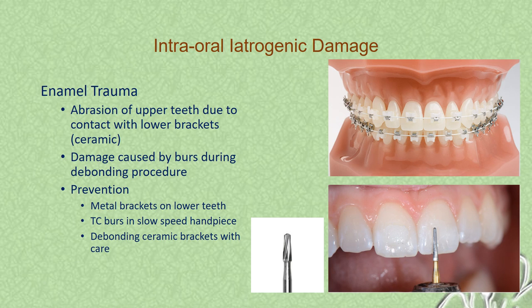Enamel trauma can occur in a few ways. One is that the upper teeth get abraded due to contact with the lower brackets which are made of ceramic. Damage can also be caused by burs during the debonding process. To prevent enamel damage in the case of ceramic brackets, one way is to use metal brackets on the lower, especially lower posterior teeth.